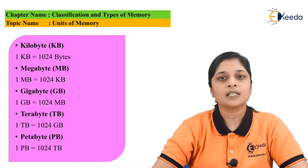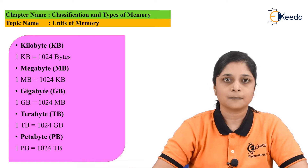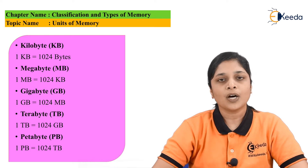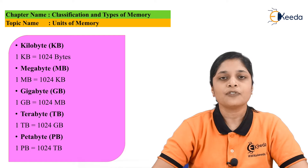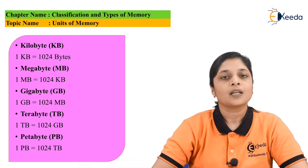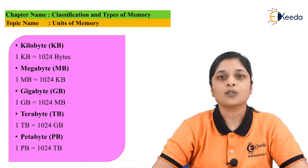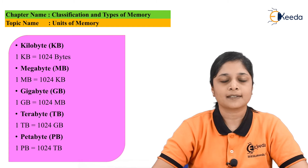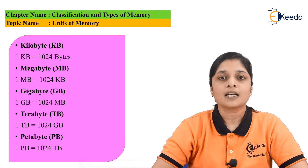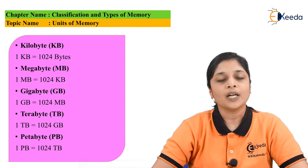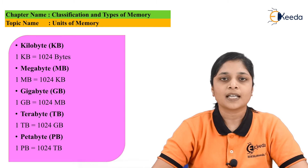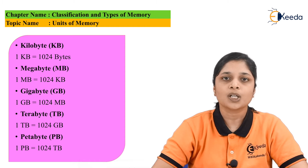One megabyte equals 1024 kilobytes. After that, we have one gigabyte, which equals 1024 megabytes. Then the next memory unit we have is terabyte: one terabyte can be defined as 1024 gigabytes.